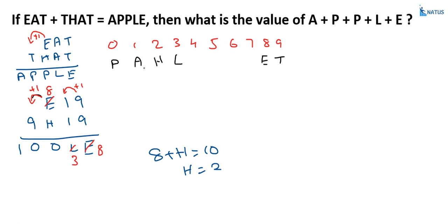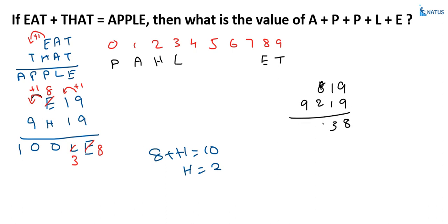Here, we now know all the values: T equals 9, E equals 8, A equals 1, L equals 3, and P equals 0. Substituting: EAT is 819, THAT is 9219, and APPLE is 10038. This satisfies the condition: 819 plus 9219 equals 10038.